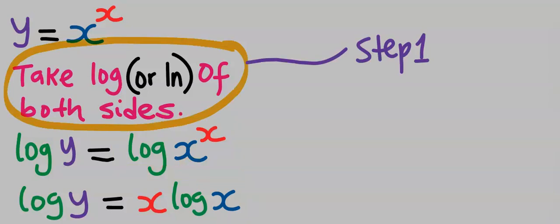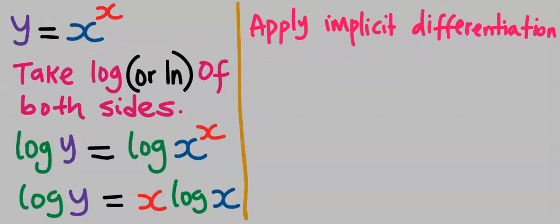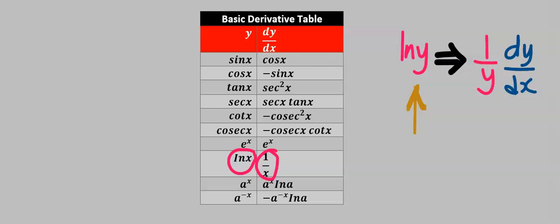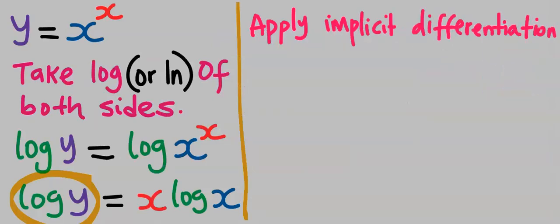This is just step one. Next, apply implicit differentiation to both sides of the function. When we differentiate the natural log of y, from the basic derivative table, differentiating the natural log of x gives 1 over x. However, when you differentiate the natural log of y, you get 1 over y, but since it is y we differentiated, we multiply it with dy/dx according to the rule of implicit differentiation. The exception is whenever you differentiate x. Hence, differentiating log y gives 1 over y multiplied by dy/dx.